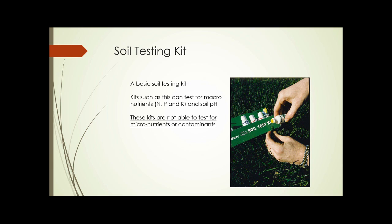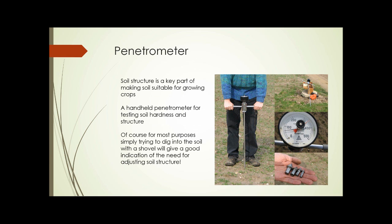This photograph shows a consumer soil testing kit. With a basic kit such as this one, you can test for the macronutrients nitrogen, phosphorus, and potassium, as well as soil pH. These kits are not able to test for micronutrients or contaminants. This is a soil penetrometer, used for testing soil structure and hardness. For most purposes, just digging into the soil — or trying to dig into it with a shovel — will give a good indication of the need for adjusting soil structure, though a penetrometer can give very accurate readings of soil hardness and density.